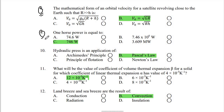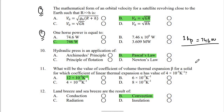Number 9: One horsepower is equal to? The conversion between horsepower and watts: 1 HP = 746 W. So option C is the right answer.